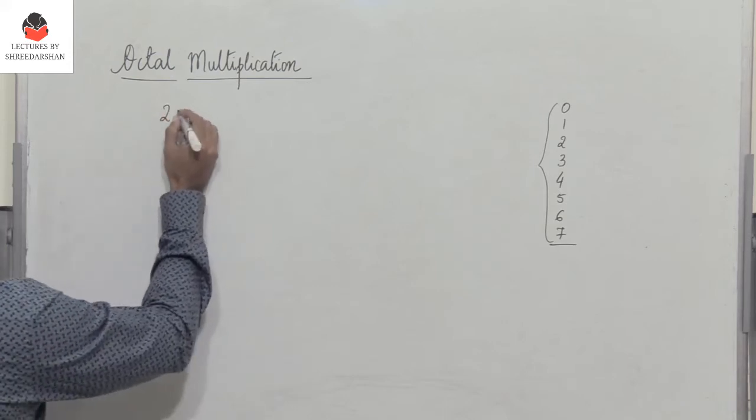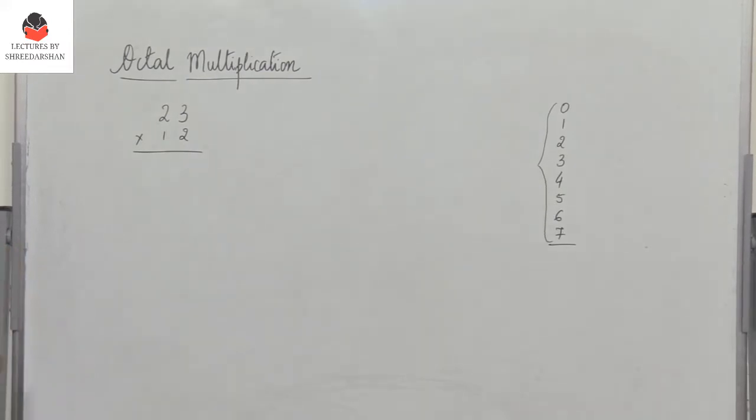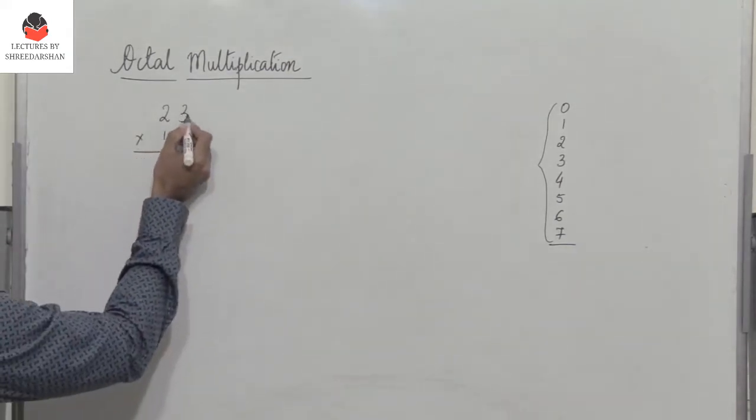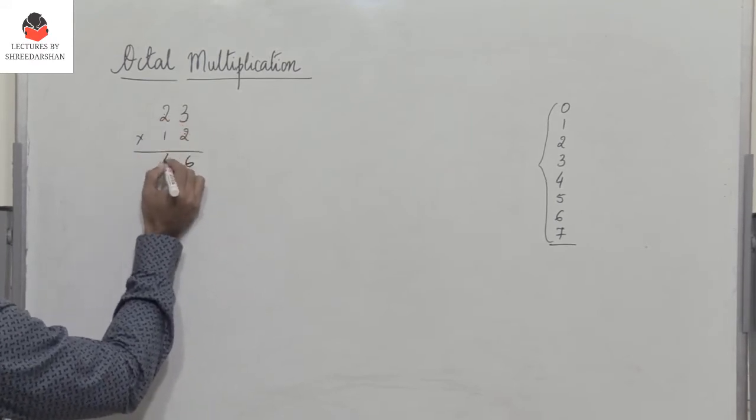I need to multiply 23 with 12. Now I've taken an example where when you multiply these two numbers, nowhere will the result go beyond 7. So here you have 2 into 3 which is 6. 2 into 2 is 4.